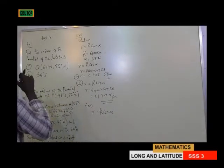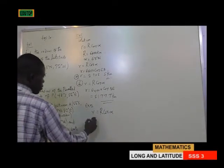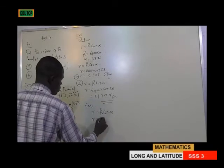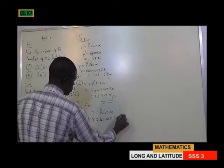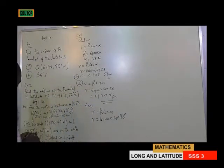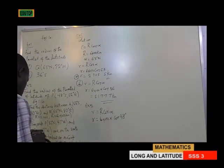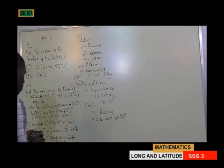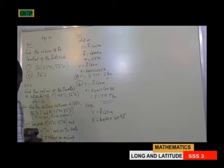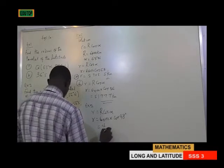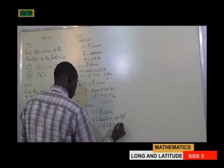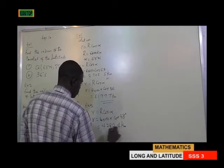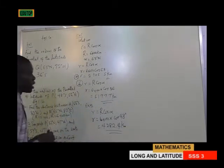The longitude is given to you to distract you, so we just make use of that. We have R equals 6,400 times cos 48 degrees, which gives us 4,282.4 kilometers. That is how to determine that.